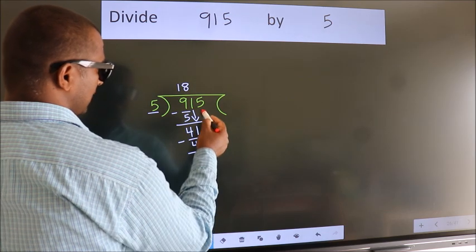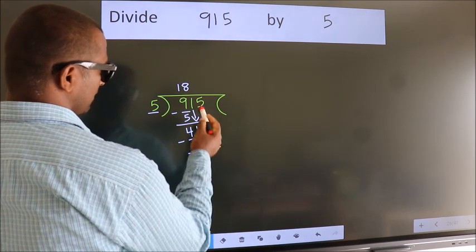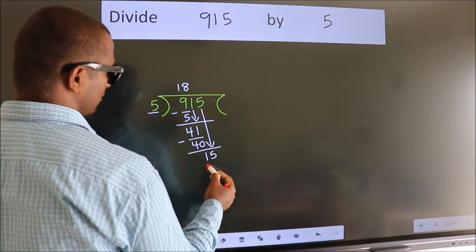After this, bring down the beside number. So 5 down. So 15.